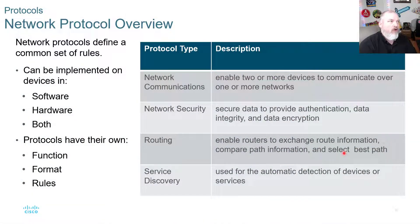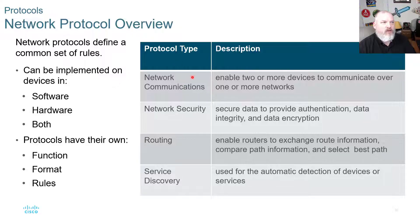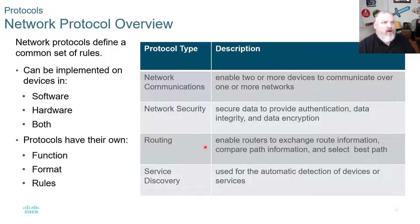Network protocol overview: network protocols define a common set of rules. They can be implemented on devices in software, hardware, or both, and protocols have their own function, format, and rules. Protocol type 'network communication' enables two or more devices to communicate over one or more networks. Network security secures data to provide authentication, data integrity, and data encryption. Routing enables routers to exchange route information, compare path information, and select the best path. Service discovery is used for automatic detection of devices or services.